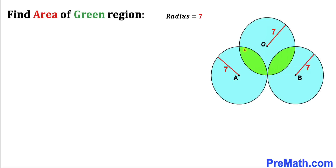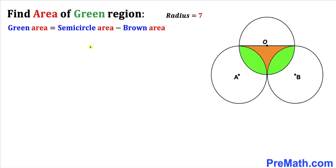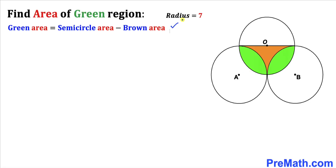Let's make an observation since we are going to calculate the area of this green shaded region. We are going to focus on this semi-circle, and we can see that the green region area is equal to the area of this whole semi-circle minus the area of this brown shaded region.